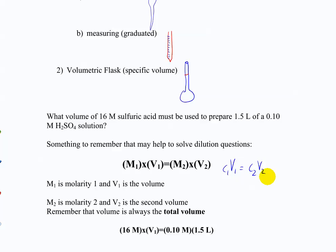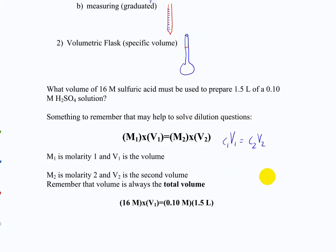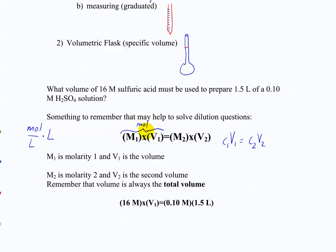Why does M1V1 = M2V2 work? Because M1, or concentration, is moles per liter, and V1 is liters — so they cancel out and you're left with moles. M1V1 effectively equals moles, and M2V2 also equals moles. In a dilution, moles always equals moles — you haven't changed the number of moles. That's why this relationship works; it's the same logic we used in the step-by-step approach.